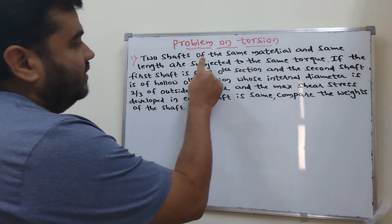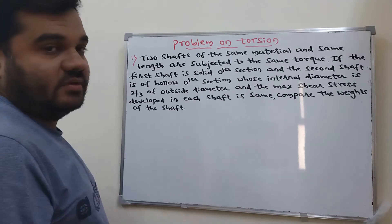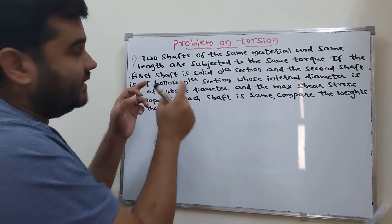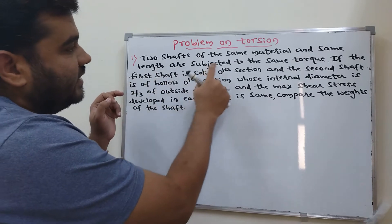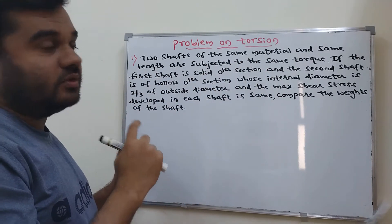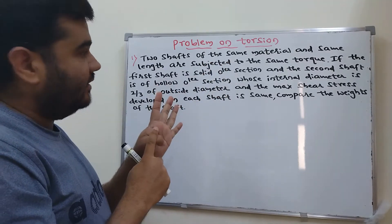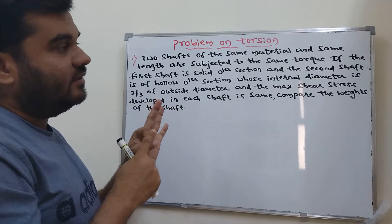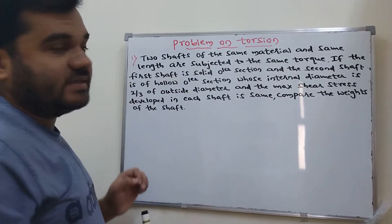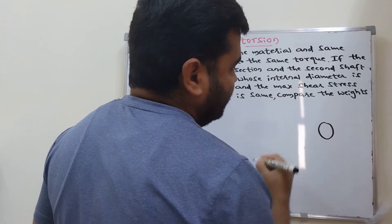Two shafts of the same material and same lengths are subjected to the same torque. Same material, same length, and the same torque. The first shaft is a solid circular section.